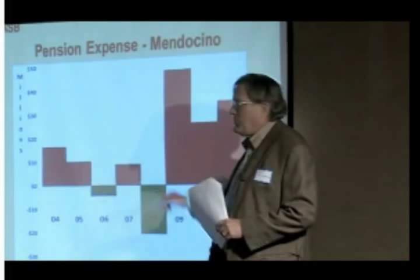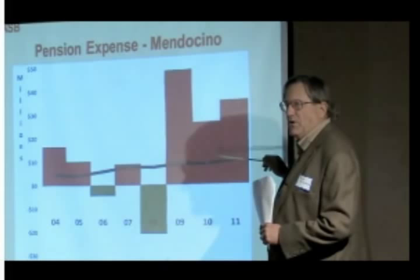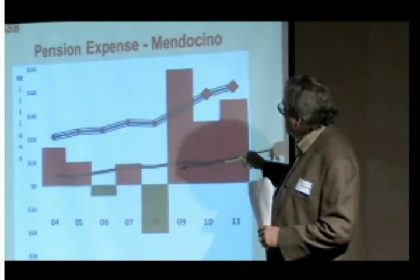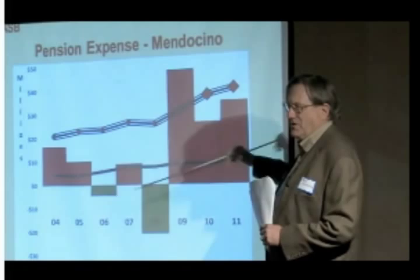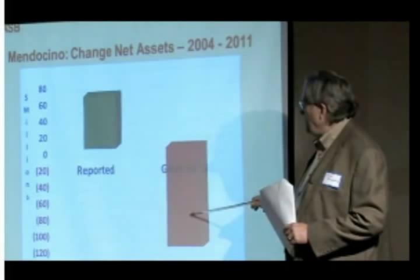These are those eight years before — these are the increases, and these were the couple of years that were good. This is what the county paid to the pension fund and reported as its pension expense. This is what GASB 68 would have made them report — it's four times more than what the county reported. In those eight years, the county reported that it had a $60 million surplus. If GASB 68 had been in effect, they would have reported a $100 million deficit.